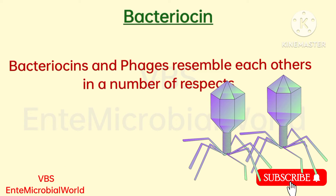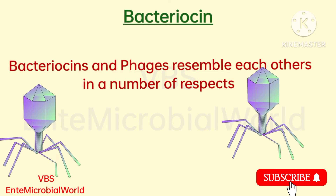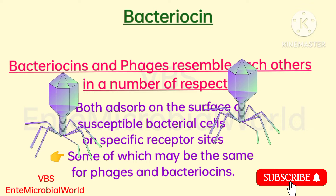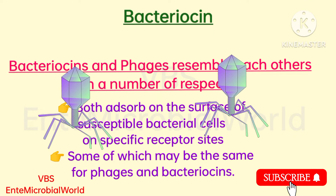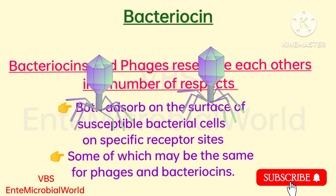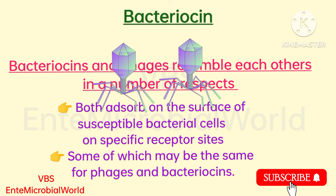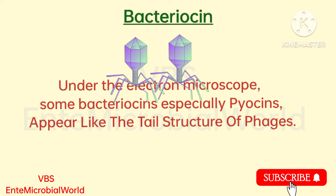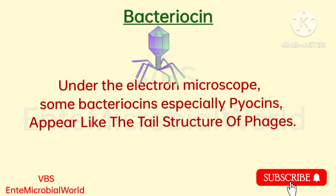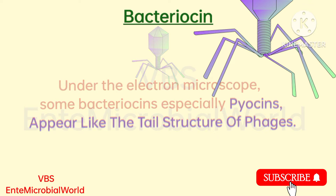Bacteriocins and phages resemble each other in a number of respects. Both adsorb on the surface of susceptible bacterial cells on specific receptor sites, some of which may be the same for phages and bacteriocins. Under the electron microscope, some bacteriocins — especially pyocins — appear like the tail structure of phages.